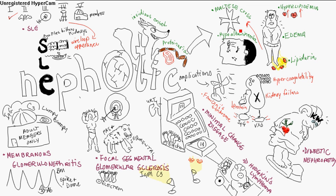With lipiduria, you can get a Maltese cross appearance under polarized light, and that's mentioned as part of nephrotic syndrome.